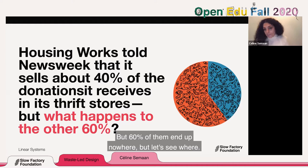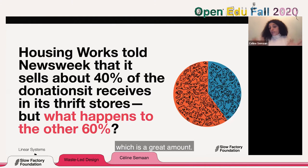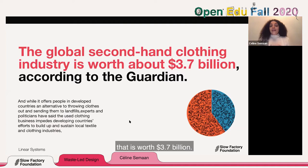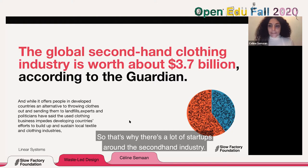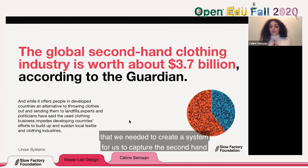Only 40% of donated clothes are washed, organized, and resold in thrift stores — which is a great amount. But what happens to the 60%? The global secondhand clothing industry is worth $3.7 billion. That's why there are so many startups around the secondhand industry. The OGs were eBay — they immediately understood the need to create a system to capture the secondhand economy. Then you have the thrift stores, who were the OGs before eBay.